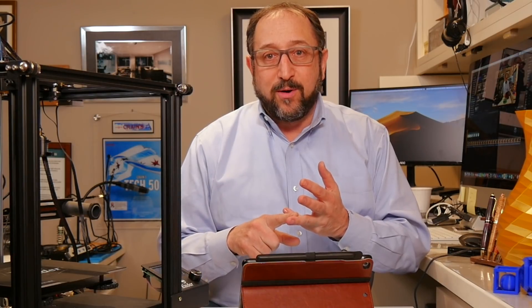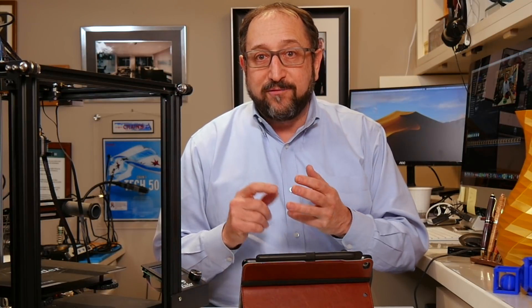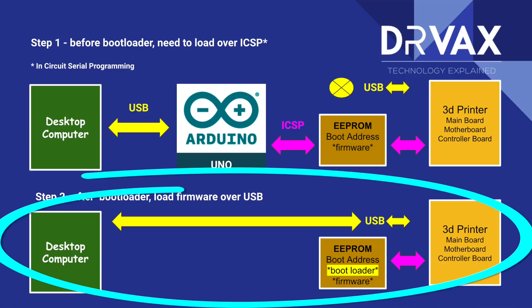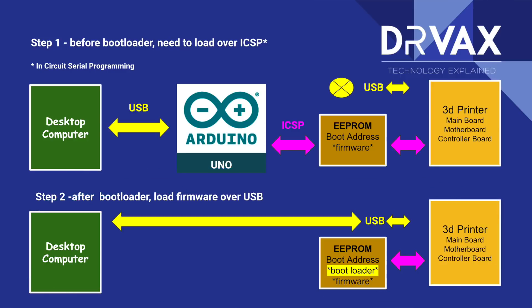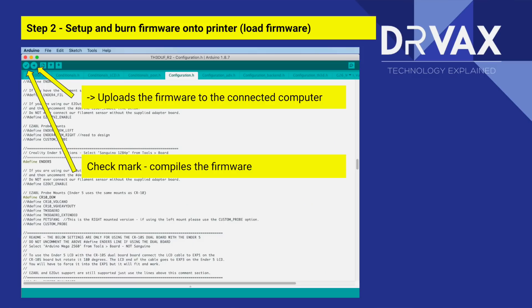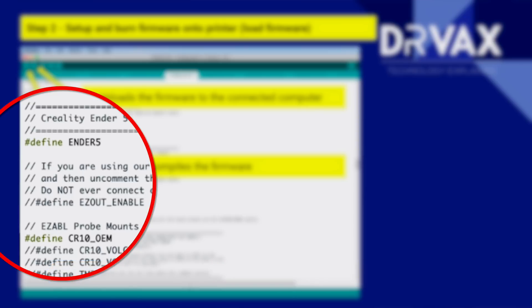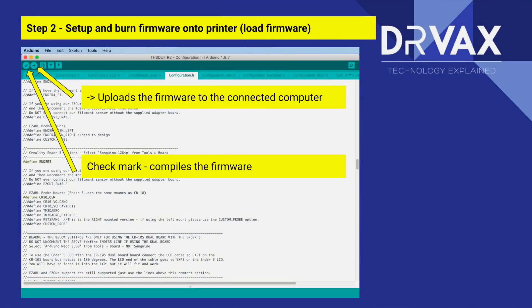The third step is we're going to close up our Ender 5, connect it directly over a USB cable to our computer, and use the Arduino software to load the firmware onto the Ender 5. Prior to loading the firmware, we're going to set some configuration options in the firmware provided by TH3D, compile that software, and that's the firmware we're going to load.